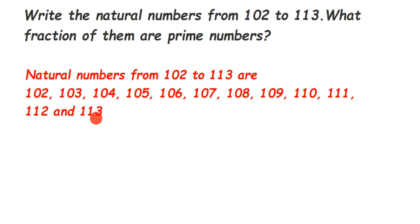From this list we have to find out the prime numbers. There are two types of numbers: prime numbers and composite numbers. Prime numbers are those which appear only in the 1 times table and their own times table. For example, 3 goes only in the 1 table and the 3 table — it has only two factors: 1 and the number itself.